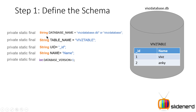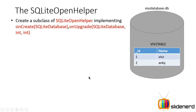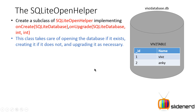Now let's talk about the SQLiteOpenHelper class. Create a subclass of SQLiteOpenHelper and implement the methods onCreate and onUpgrade. SQLiteOpenHelper is a class that takes care of opening the database if it exists, creating it if it does not exist, and upgrading it when you perform changes to the table structure — like adding columns, removing columns, or changing the data type of a column.